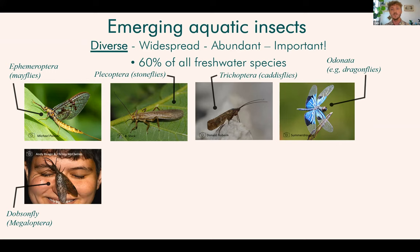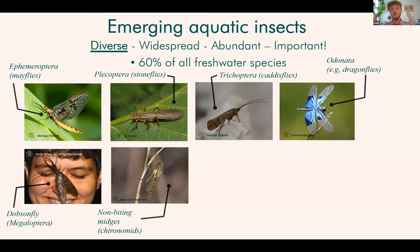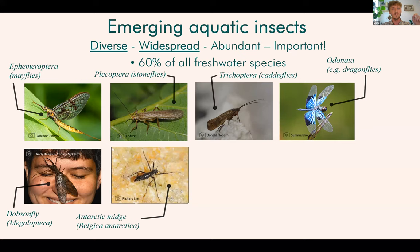This one here is a particular favourite of mine — it's the dobsonfly, which is in the group Megaloptera. All five of these groups have almost exclusively aquatic larvae and all have this cross-ecosystem life cycle. But let's not forget the true flies, the Diptera. Many key aquatic insect groups are flies, including the non-biting midge or chironomid illustrated here. Chironomids exemplify how emerging aquatic insects are not just diverse but also widespread — they can be found in pretty much any freshwater environment on every single continent, including Antarctica. The Antarctic midge holds the title as the largest non-marine animal on the entire Antarctic continent.